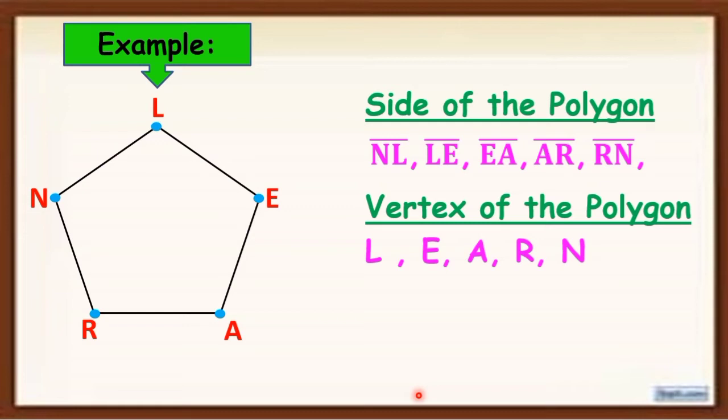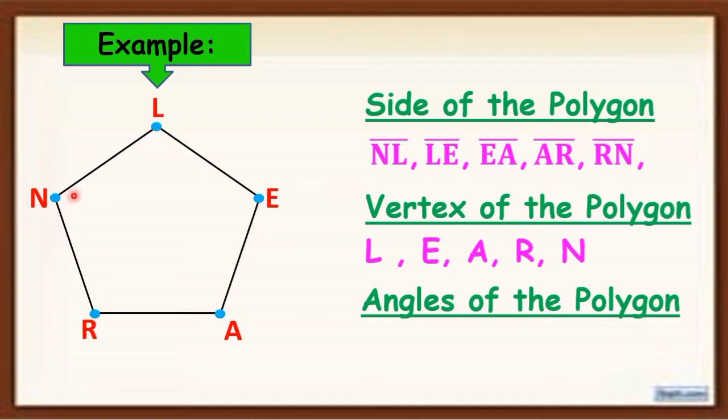And if we are going to name the angles of a polygon, the names are angle L, angle E, angle A, angle R, and angle N. Or you can name it using the three letters, using the side vertex side. Okay?